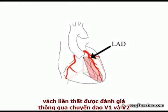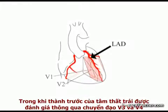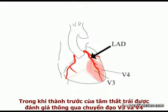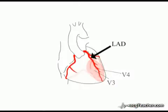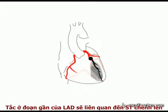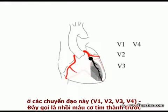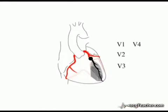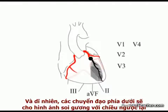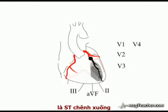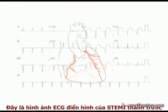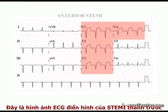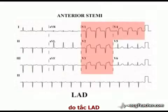The septum is examined by leads V1 and V2, while the anterior surface of the left ventricle is examined by leads V3 and V4. Proximal obstruction of the LAD will be associated with ST elevation in these leads — an anterior MI. The inferior leads are viewing the injury current from a diametrically opposite position and may show reciprocal ST depression. This is the classic ECG pattern for an anterior MI secondary to LAD obstruction.